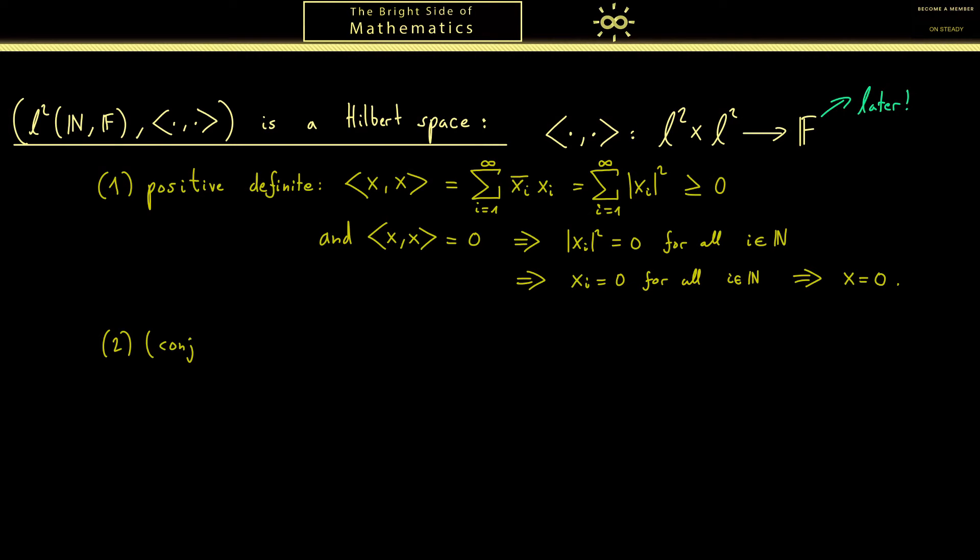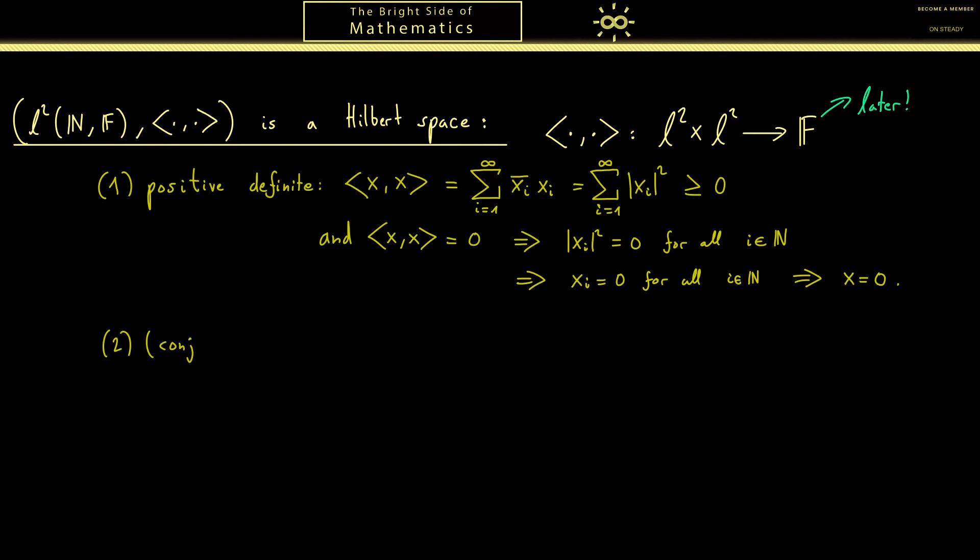Now going to the second property, which was that the inner product is conjugate symmetric. Of course, this is now very simple to show. Just look at the inner product <y, x> where we look at the complex conjugation. So let's mark that in green. And we have it then over the whole series. But of course, we can pull that inside. And then the normal calculation rules tell us that we have y_i x_i complex conjugation. Which is then of course <x, y> in this order.